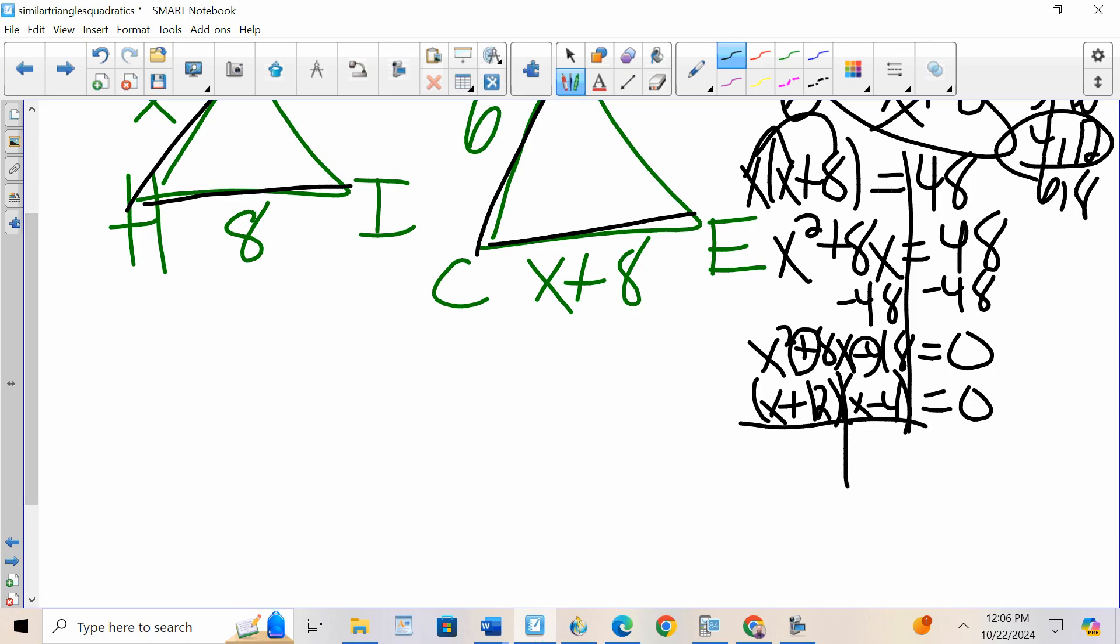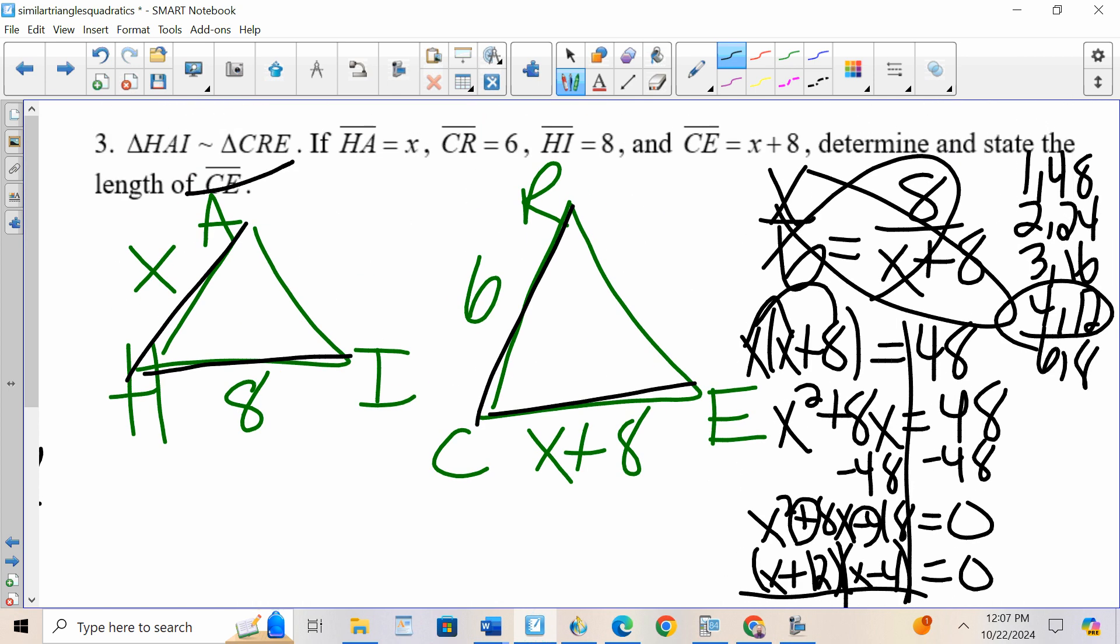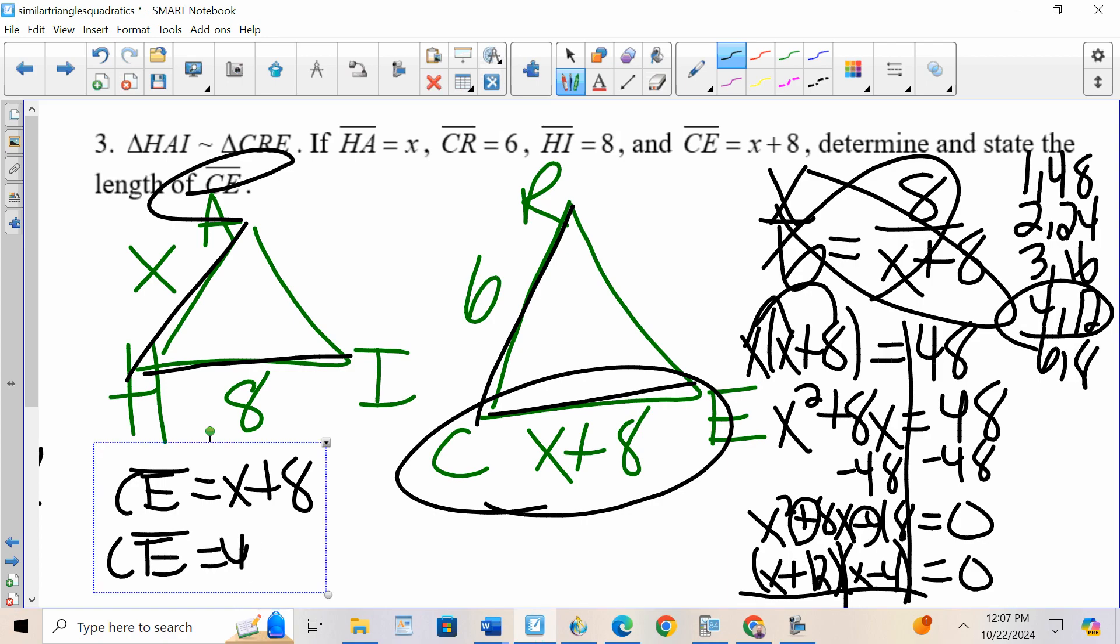I set each factor equal to 0. X plus 12 equals 0, X minus 4 equals 0. Get X by itself, I essentially switch the sign. Can't have a negative distance, so X equals 4. The question is asking for CE. Well CE is X plus 8, so CE is 4 plus 8, which is 12.